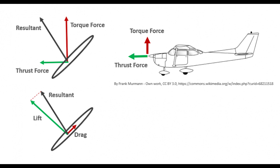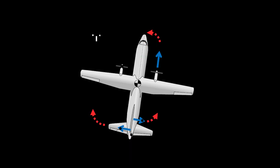The angle at which the blades meet the air, known as the blade angle or pitch, also affects the propeller's performance. A higher pitch angle increases the amount of air pushed backward, resulting in greater thrust, but requiring more engine power. Conversely, a lower pitch angle reduces thrust but improves efficiency at lower speeds.